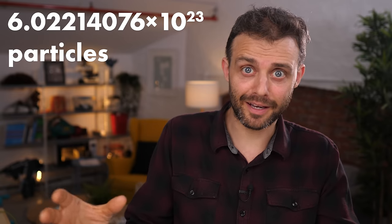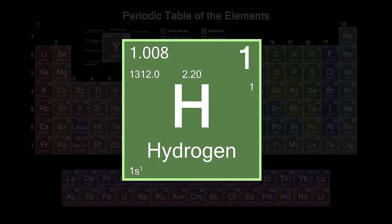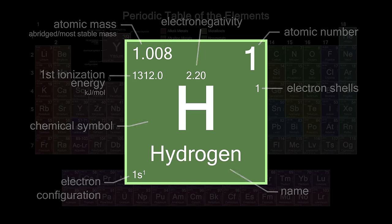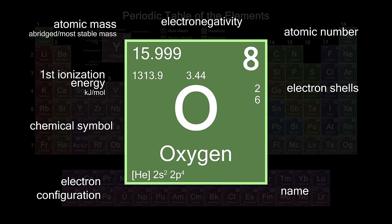You might be thinking that the definition I just gave is really different from the stated definition at the start of the video with that really big number in it. I'll get to that in a second, but first I want to talk about the simplification I made earlier. I said hydrogen has an atomic mass of one and oxygen has an atomic mass of 16. That's not quite true — hydrogen has an atomic mass of 1.008, and oxygen has an atomic mass of 15.999.